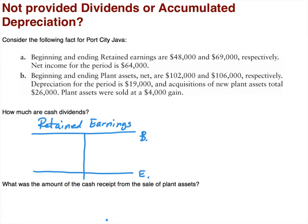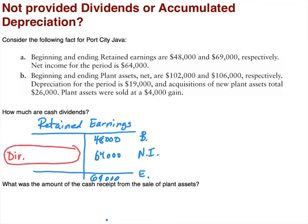Let's start with letter A. Beginning retained earnings are $48,000, ending retained earnings are $69,000, and net income for the period is $64,000. Net income increases retained earnings, so we have net income of $64,000 increasing retained earnings. But $48,000 plus $64,000 does not equal $69,000, so something must have caused retained earnings to decrease — and what makes retained earnings go down are dividends.